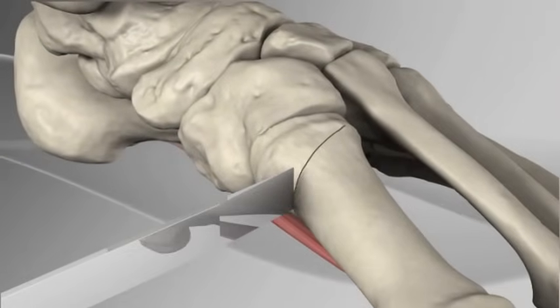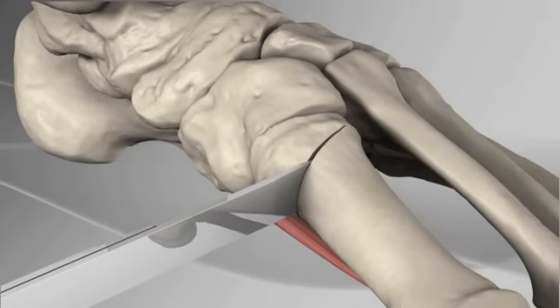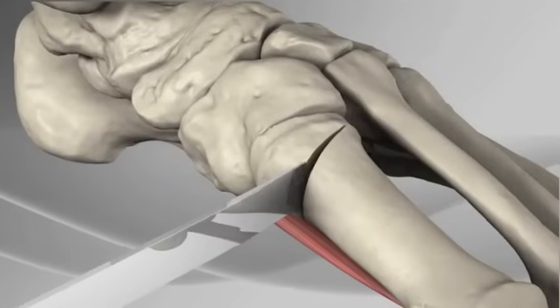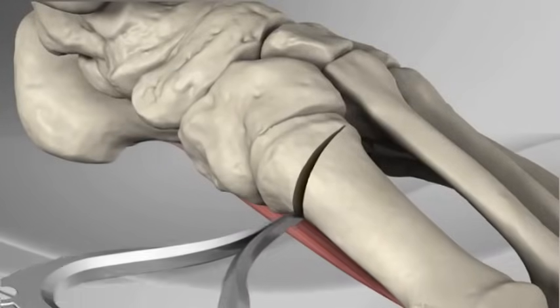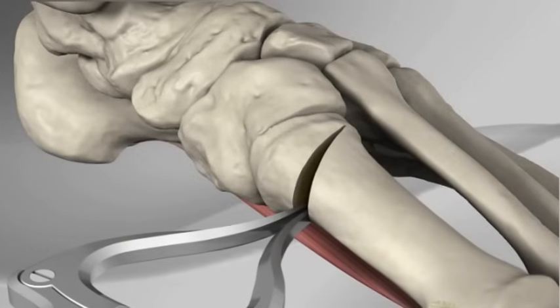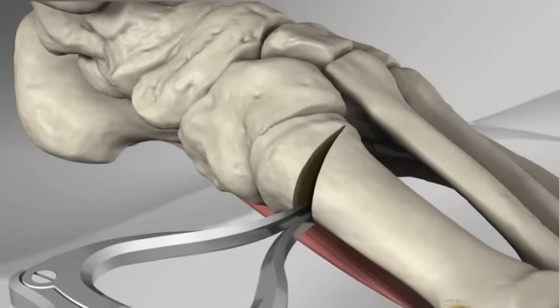An osteotome or orthopedic chisel is used to enlarge the cut. A jack is then inserted and the saw cut is further widened until the bunion deformity is corrected.